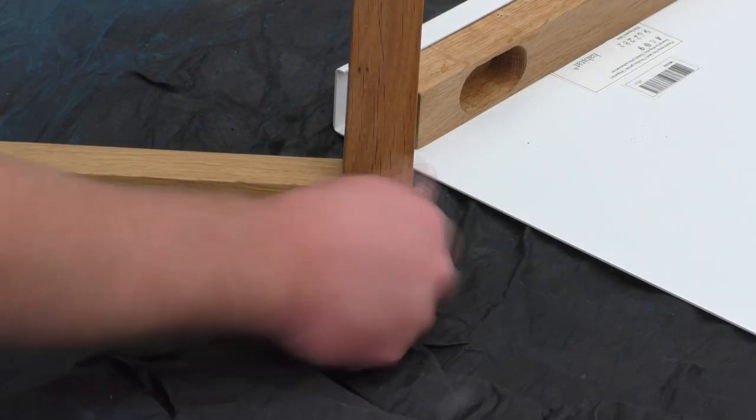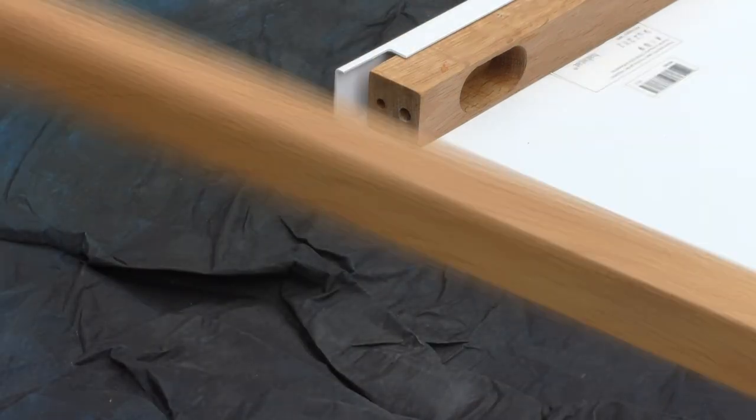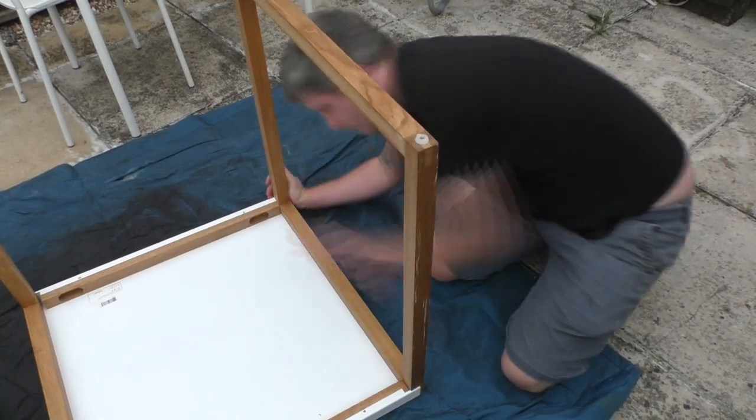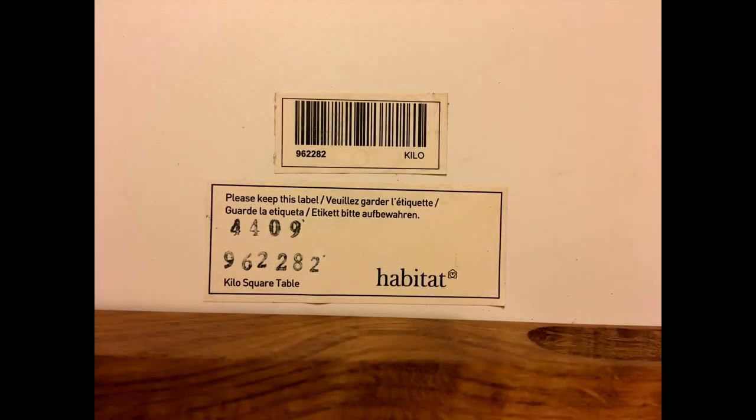The first thing I did was to reassemble the table to help me figure out what options I had and how best to go about adjusting the height of the table. The label on the underside of the tabletop shows this table is by Habitat from a range called Kilo.